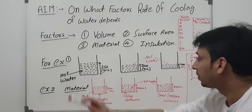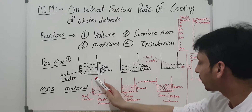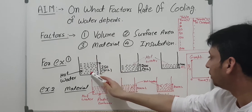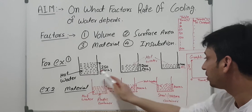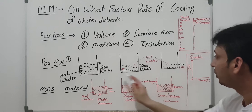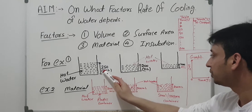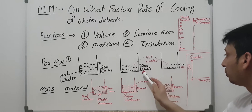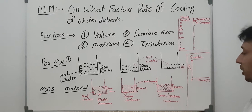For example, in the case of volume, you can see in this diagram I have taken the same glass beaker in all cases, filled with different volumes of water. The first beaker has 250 ml, the second beaker is filled with hot water at 200 ml, and the third one is 100 ml.